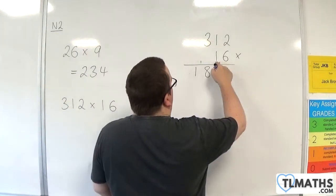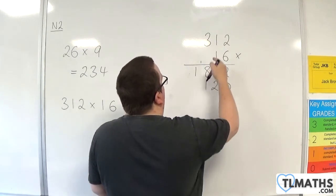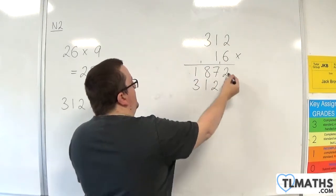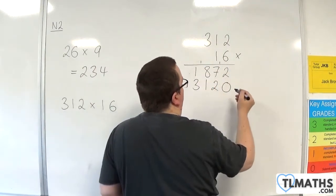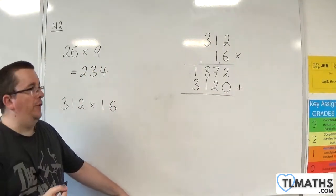So now I can do 1 times 2, 1 times 1, and 1 times 3. And now I have my two numbers here. The two numbers that I get, I need to add together to get my final answer.